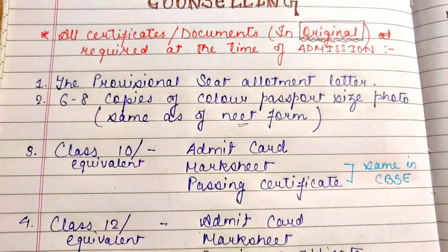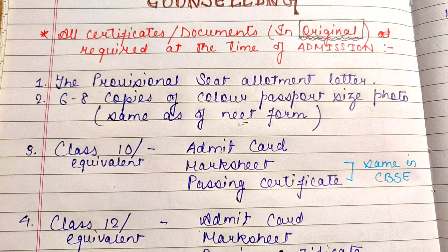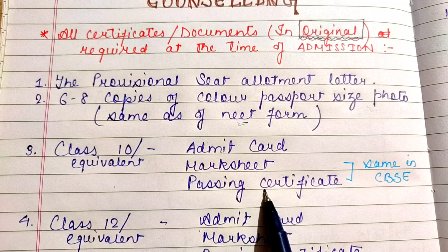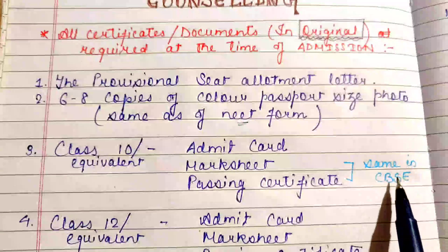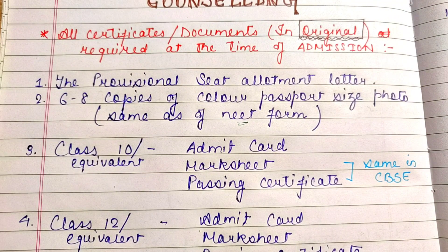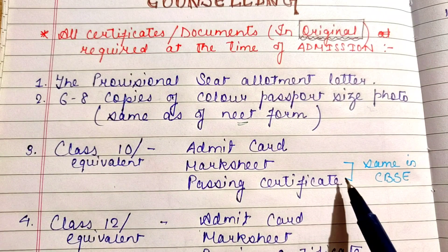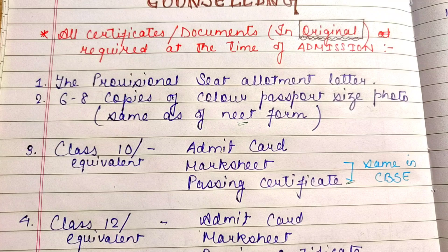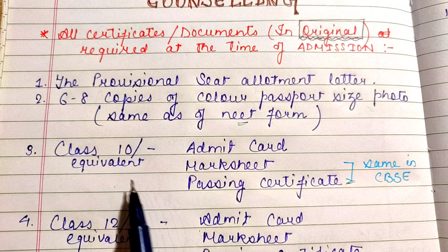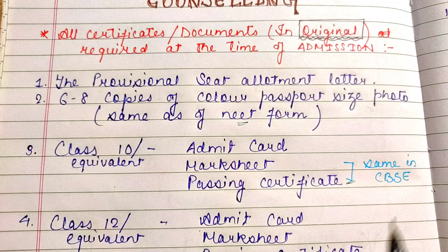For class 10th or equivalent exam, you need three things: the admit card, the mark sheet, and the passing certificate. In CBSE, the mark sheet and passing certificate are the same document. So for class 10th, bring the admit card, mark sheet, and passing certificate.